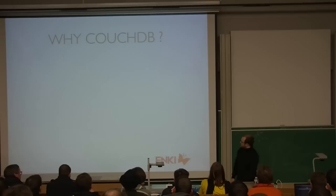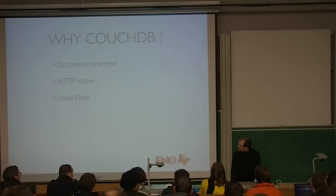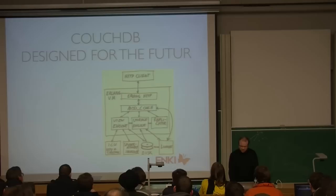So why CouchDB? First, this is a document-oriented database. That means that you don't store only key-value — you store documents with the key. CouchDB is HTTP native, and we will see what that means. You can have your data local or on a centralized server. You can make P2P applications with CouchDB. And it scales.